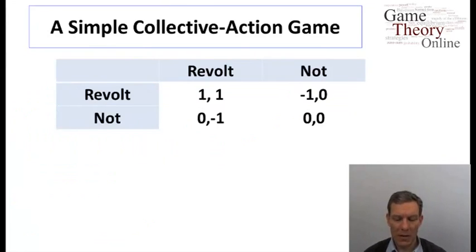Here's another example, a simple collective action game. So think of two players. They can both decide whether to revolt against an authority or not to revolt. If they both revolt, then they're successful. So player one here can choose either revolt or not. Player two, the column player, can choose to revolt or not. If they both end up revolting, then player one gets a one, player two gets a one. They're successful in their revolution. If only one shows up to the revolution, that's not good for the person who shows up. They're not strong enough alone to have a successful revolt.